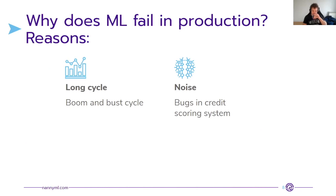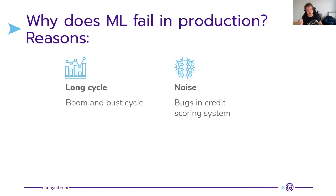Two more causes: very long cycles not captured in training data — like the boom-and-bust cycle spanning 20, 30, or 40 years. If we only use 5–10 years of data, we can't capture the cyclical nature, and as we enter a new phase the model won't capture the patterns. Finally, as data becomes noisier — perhaps due to bugs in the credit scoring system — we lose performance.